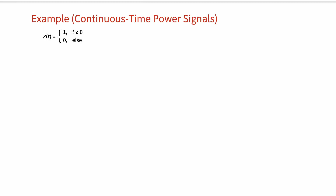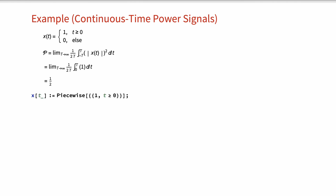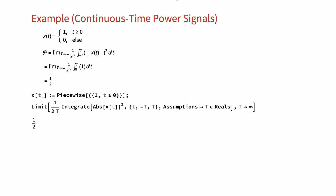Let's find the average power of the signal x(t) as defined here. Starting with the definition, we replace the value of x(t). The integration is taken from zero to capital T. Simplifying, we get 1/2. Similarly, using the Wolfram Language, we can define x(t) first, then computing the average power we get the same value.